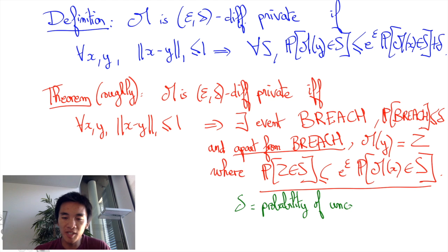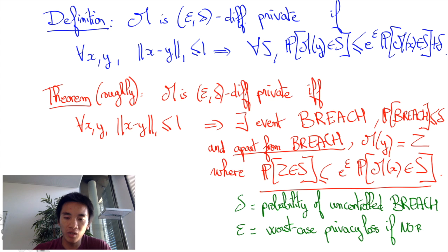But importantly, delta measures the probability of some uncontrolled privacy breach, while epsilon is a measure of how much is lost when there is no uncontrolled privacy breach. This is why delta should be exponentially small—it's very important that delta is very, very small.